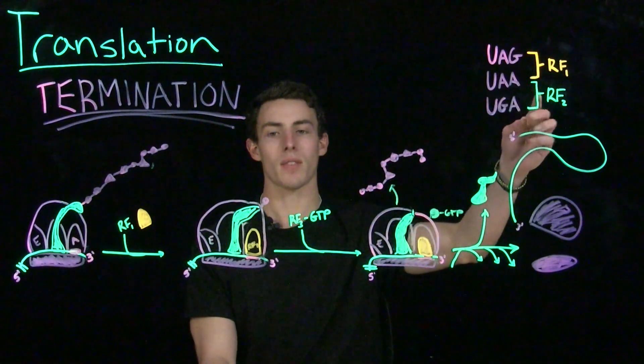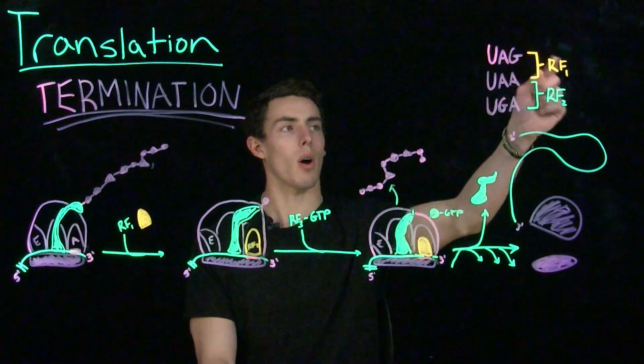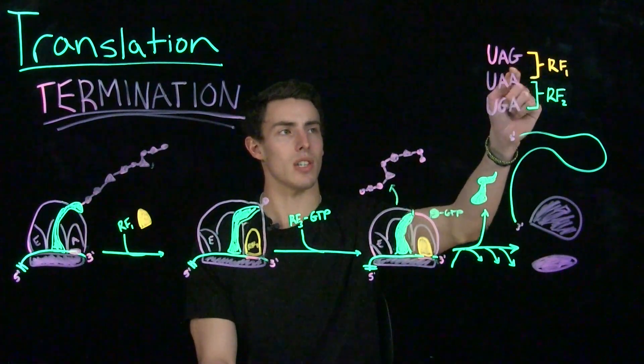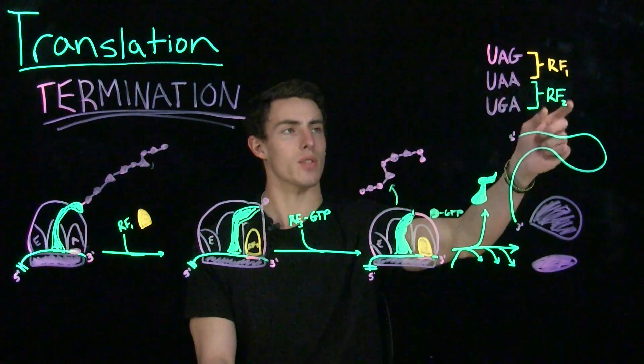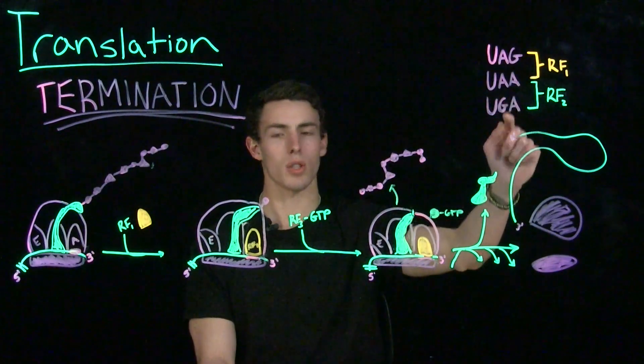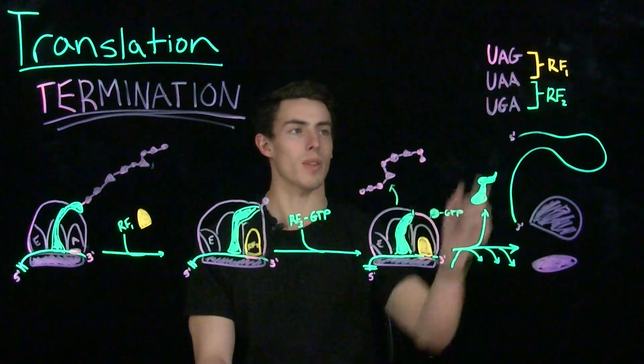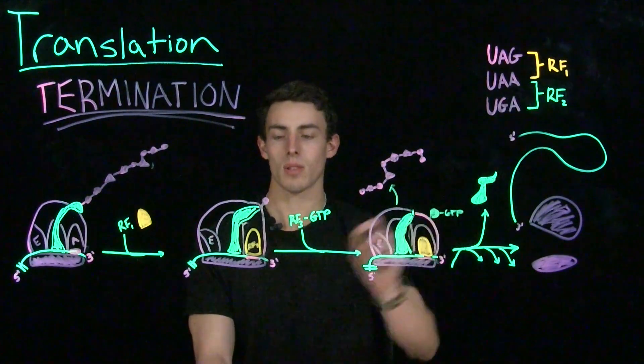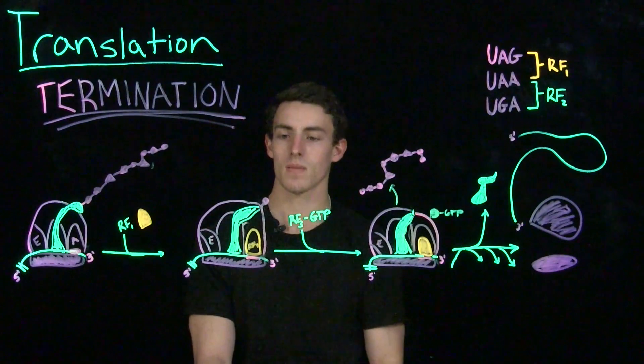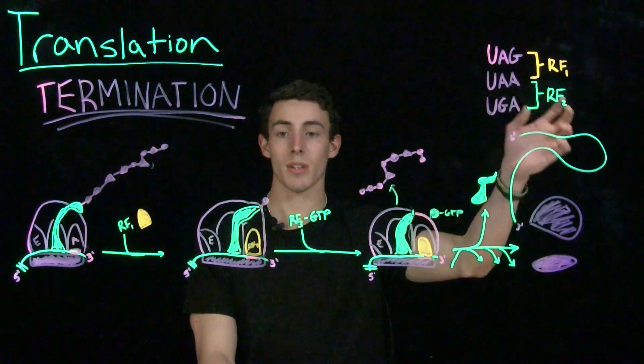And this may be FYI for you, but I just wrote this up here. RF1 will go with UAG or UAA, and RF2 will go with UAA or UGA. But either way, they're effectively the same thing, where they have an anticodon that's going to match with one of these nonsense codons. These are called RFs because they are release factors.